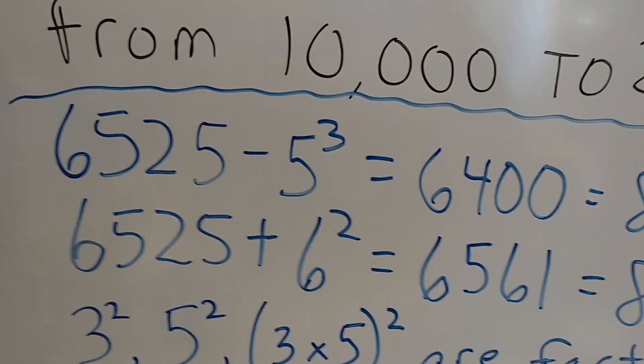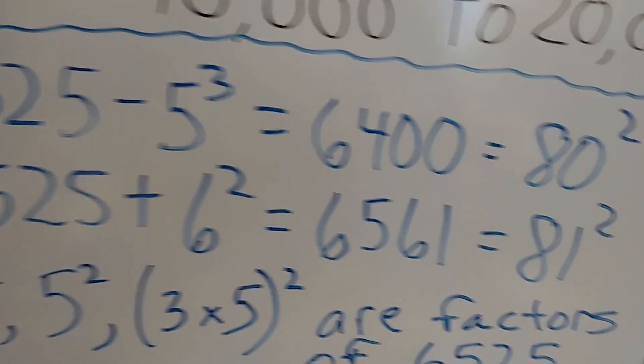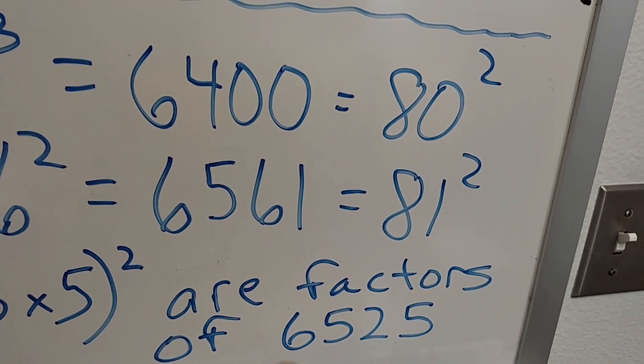Then, if I take 3 squared, which is 9, well 9 evenly divides into 6,525.